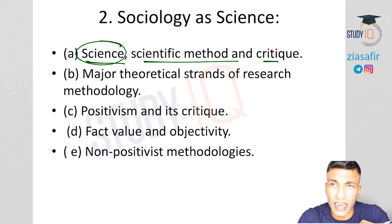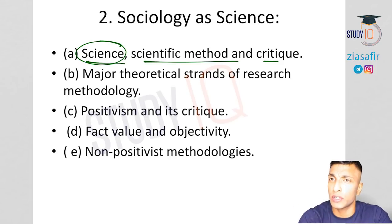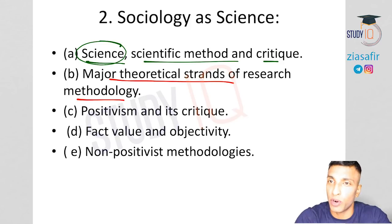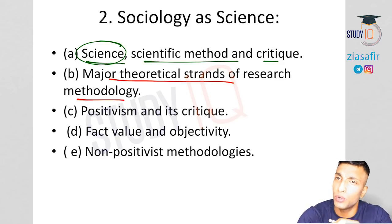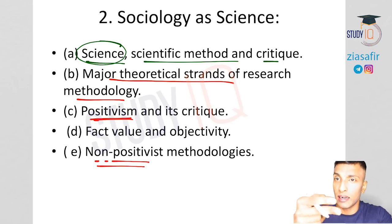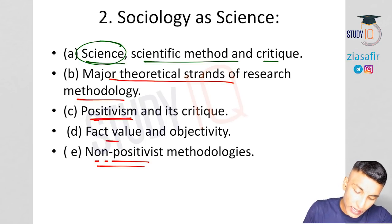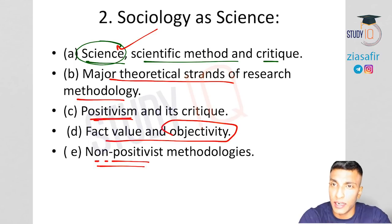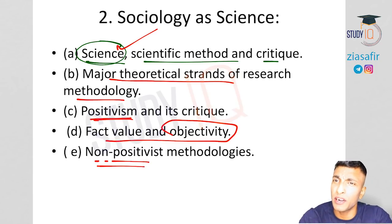The next two topics cover the two most important theoretical strands: positivism and non-positivism. Then there's the topic of fact, value, and objectivity. Can we ensure objectivity in sociological studies? Problems arise from the very start — choosing a convenient topic introduces subjectivity; collecting easily available data may not be accurate; and interpretation can be subject to gender bias, religious bias, or regional bias.